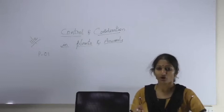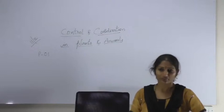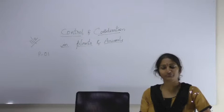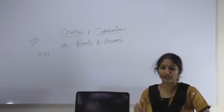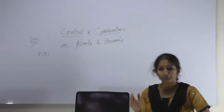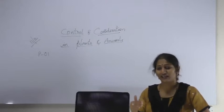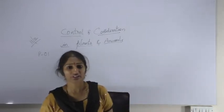We are going to study about the mechanism of how control and coordination happens in animals and also in plants. We will study various mechanisms and pathways involved in controlling and coordinating the plant and animals' growth, behavior, reproduction, and related factors. Let's see that in today's class.